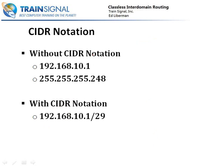One last thing to cover is CIDR notation, because that's really what CIDR is — it's all about the notation. Without CIDR notation, we write the IP address and subnet mask as 192.168.10.1 with a subnet mask of 255.255.255.248. With CIDR notation, we simply write 192.168.10.1/29, where the number after the slash represents the number of bits in the network ID. An IP address is 32 bits total, so a 29-bit network ID leaves three bits for the host ID — no need to write out the entire subnet mask.